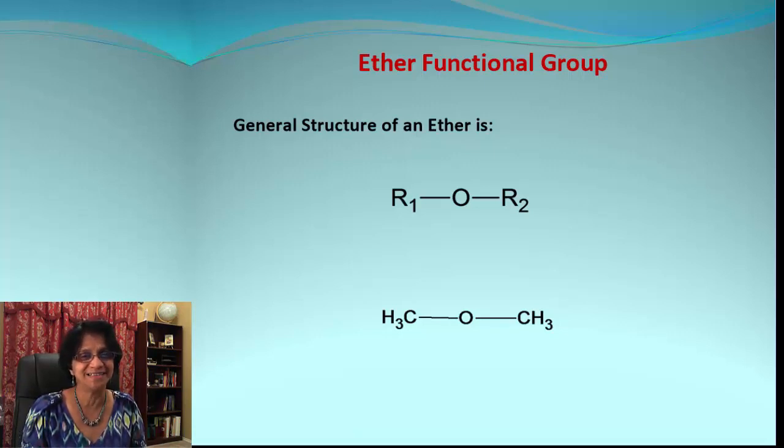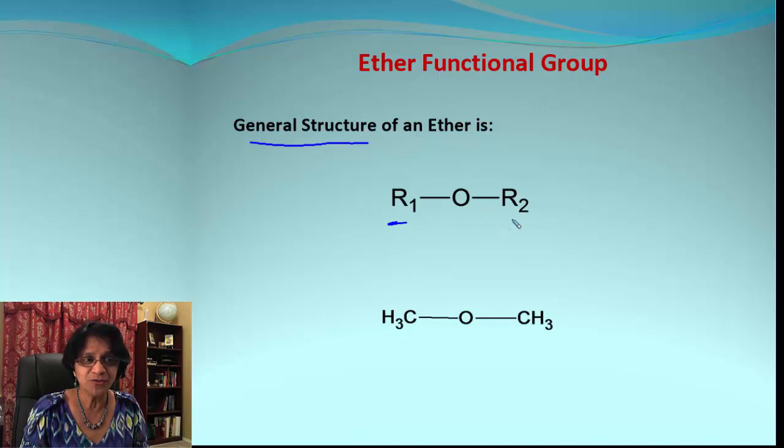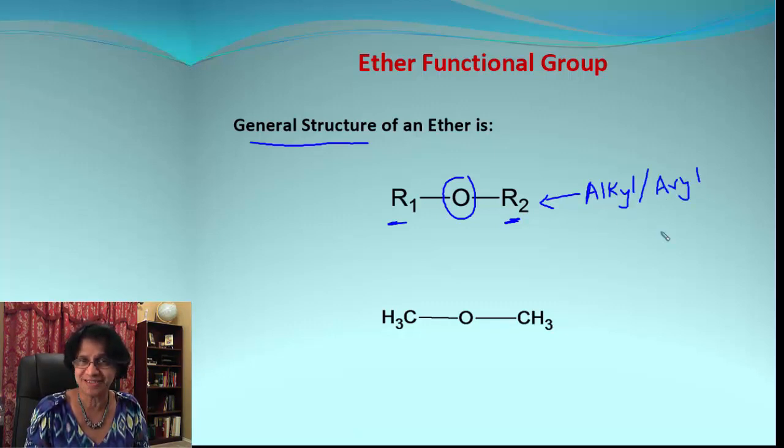Here is the general structural formula for ether. Look at this - we got two groups, R1 and R2, and they are separated by oxygen. These are alkyl groups or sometimes they could be aryl groups like aromatic groups.